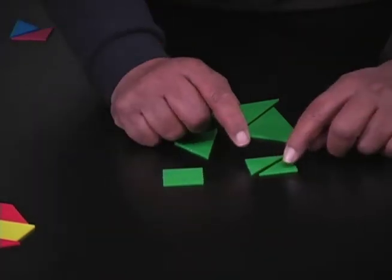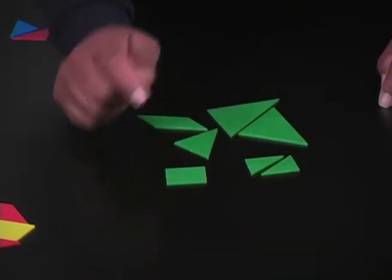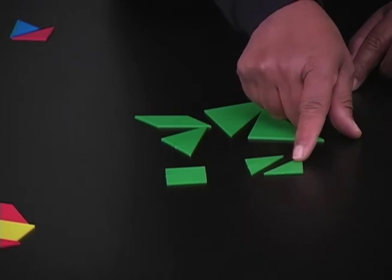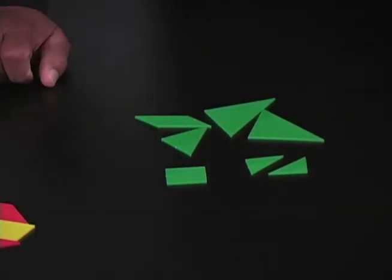If the area of this is one square unit, I can determine the area of that is two square units. So I can use this to determine the area of each of the other pieces of the tangram set.